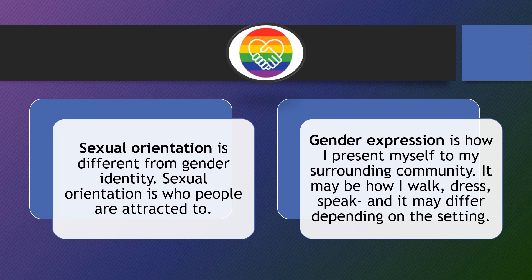Sexual orientation is different from gender identity. Sexual orientation is who people are attracted to. Gender expression is how I present myself to my surrounding community — it may be how I walk, dress, speak, and it may be different depending on the setting I'm in. It also includes the name and the pronouns I choose to use.